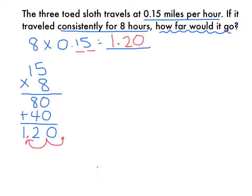Now, I need to ask myself if that makes sense. To me, it does because if this problem were 8 times 1 tenth, I would have 8 tenths, and my answer needs to be a little bit more than that. So my answer is that the three-toed sloth would go 1 and 20 hundredths miles.